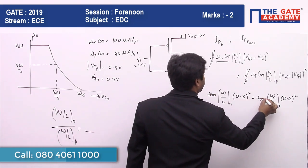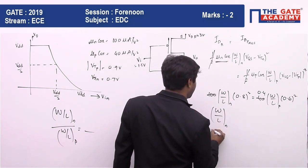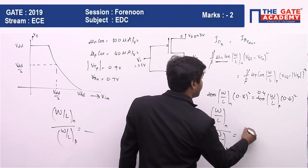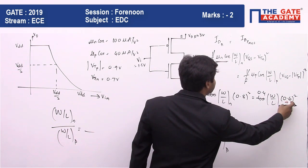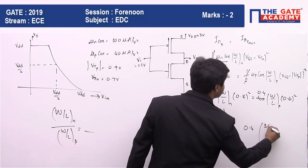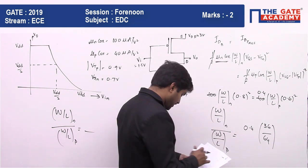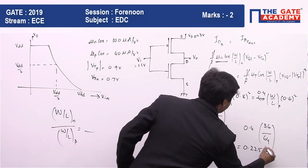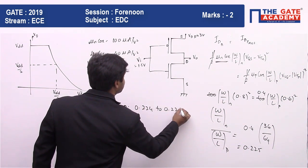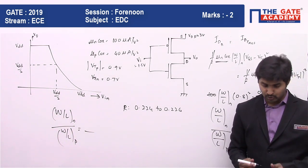Solving the equation: (W/L)N divided by (W/L)P equals 40 × (0.6)² divided by 100 × (0.8)², which gives 40 × 0.36 divided by 100 × 0.64 = 0.4/1 = 0.225. The answer is 0.225, and since 3 decimal accuracy is required, the acceptable range is 0.224 to 0.226.